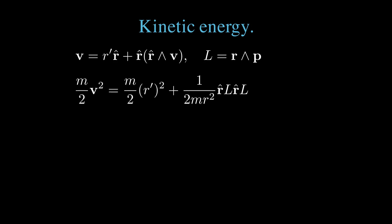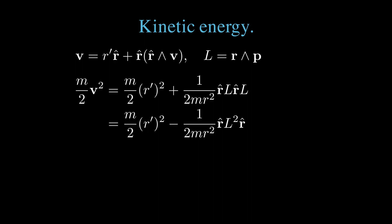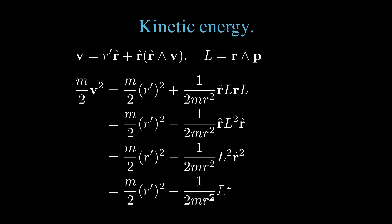The angular momentum term is 1 over 2m r squared times r̂ times l times r̂ times l. Putting r̂ and l in to commute, we can change the order, flipping the sign, leaving us with r̂ l squared r̂. Since l squared is a scalar, we can write this as l squared times r̂ squared, and r̂ squared is 1. We're left with the energy: one half m v squared equals m over 2 of r prime squared minus 1 over 2m r squared times l squared. The minus sign arises because we've used a bivector angular momentum representation, which squares to a negative value.